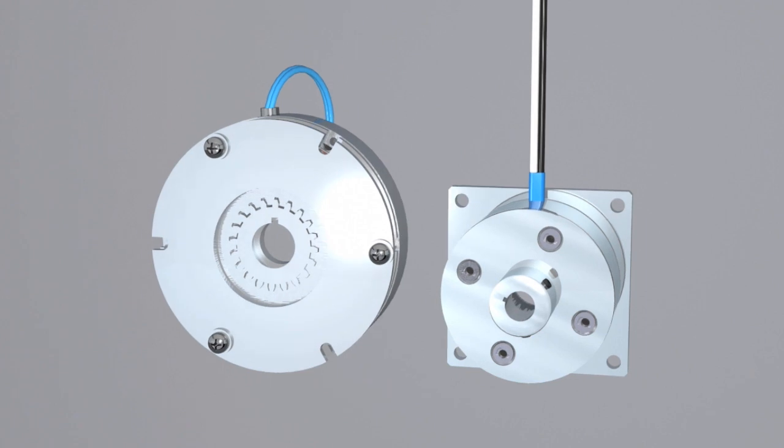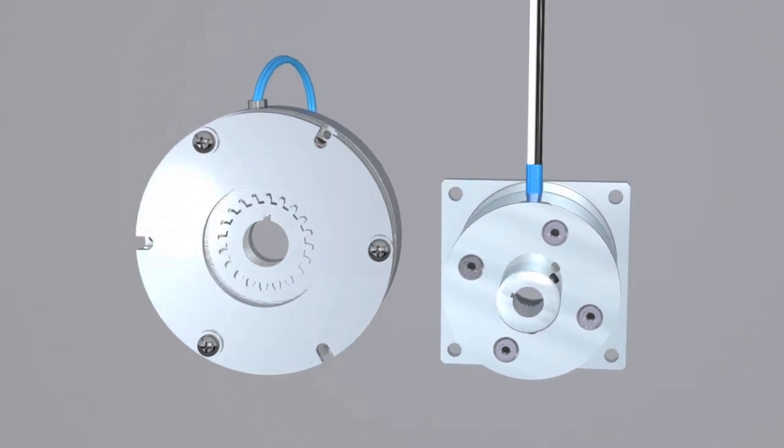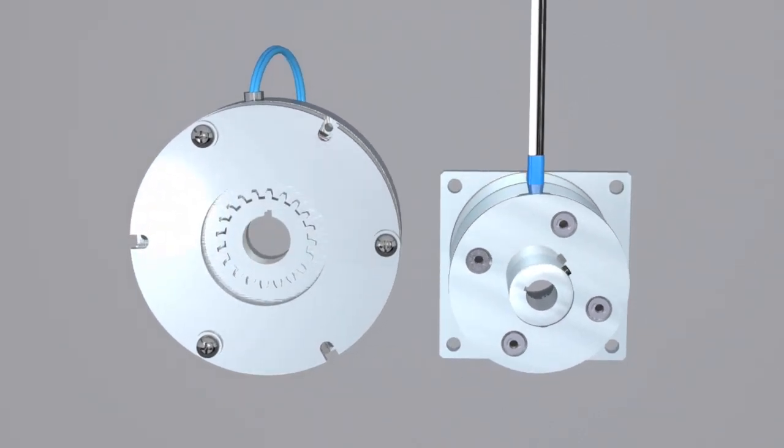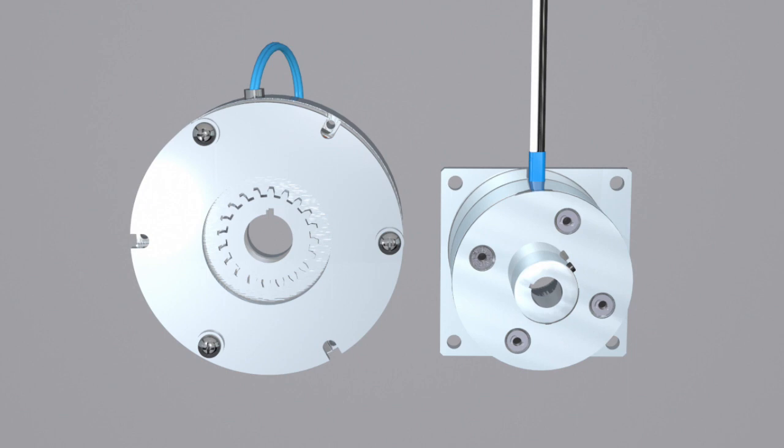In general, permanent magnet brakes have a smaller diameter and are lighter in weight than spring-applied brakes. This allows them to fit into applications where size or weight are critical.